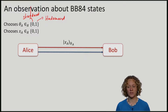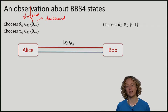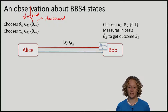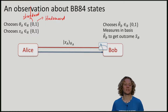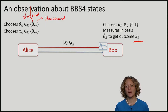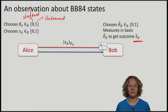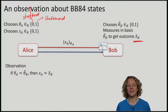Bob also chooses a random basis — standard or Hadamard — and will measure the incoming qubit in that basis. This gives him some classical measurement outcome, which I will call x tilde. Let's make an observation about this protocol: if Alice and Bob have the same basis, then in fact their bits will agree.